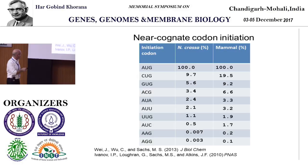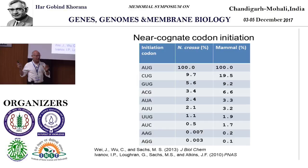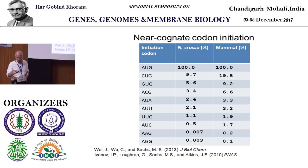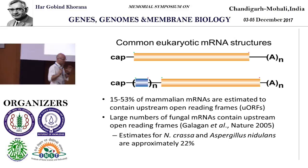One thing to draw your attention to: if you change the second position of a near-cognate to a purine, you're basically - as we would say humorously - dead meat. So if you're doing mutagenesis of a start codon, you could change it to a stop codon or put a second-position change here; otherwise there's a good possibility for some synthesis. That's part one, just to get a sense of initiation.